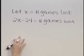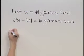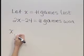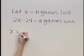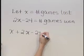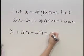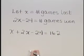We're given that the total is 162 games, so total indicates that we should add these expressions together. So X plus 2X minus 24 gives that total of 162 games.